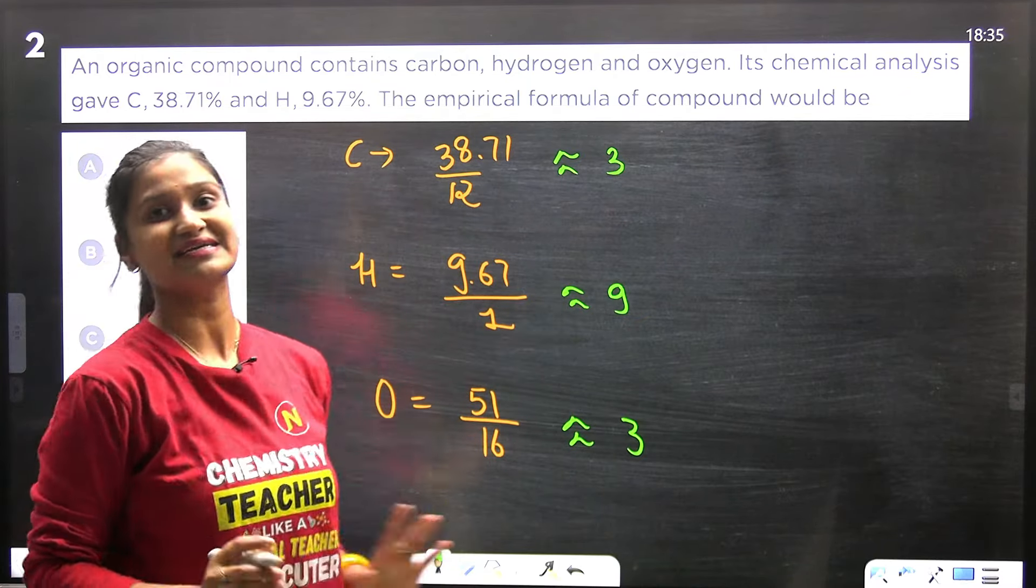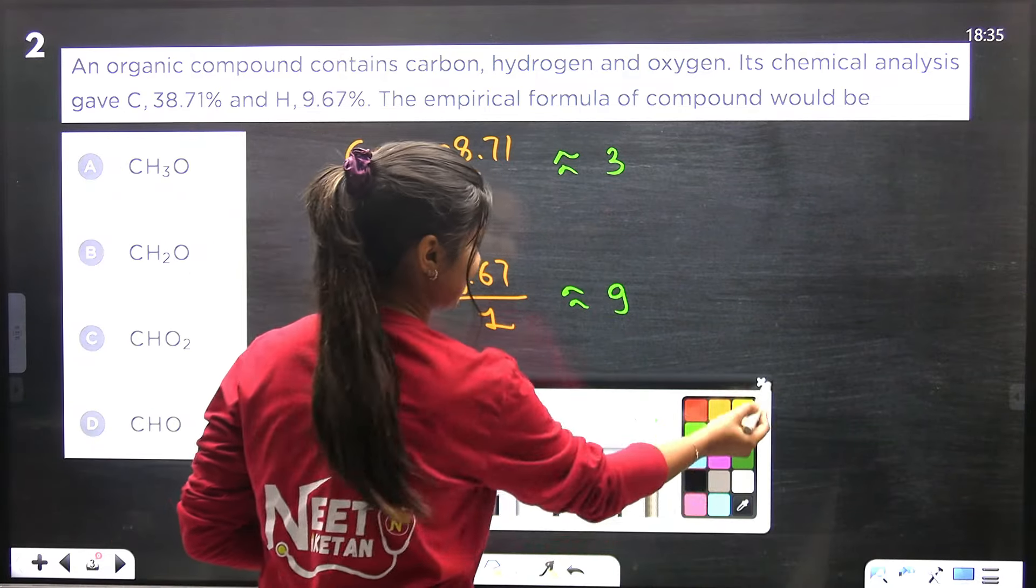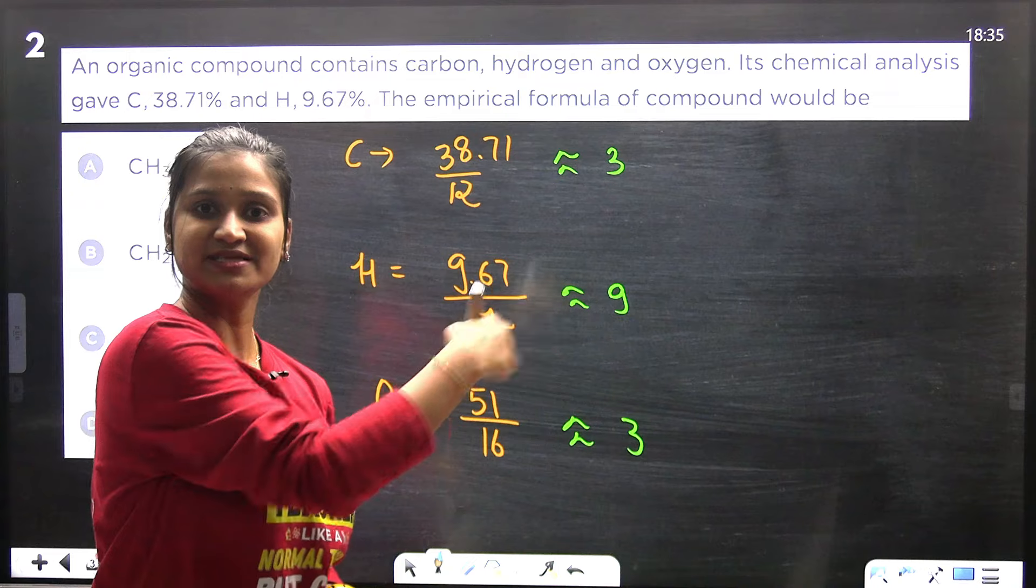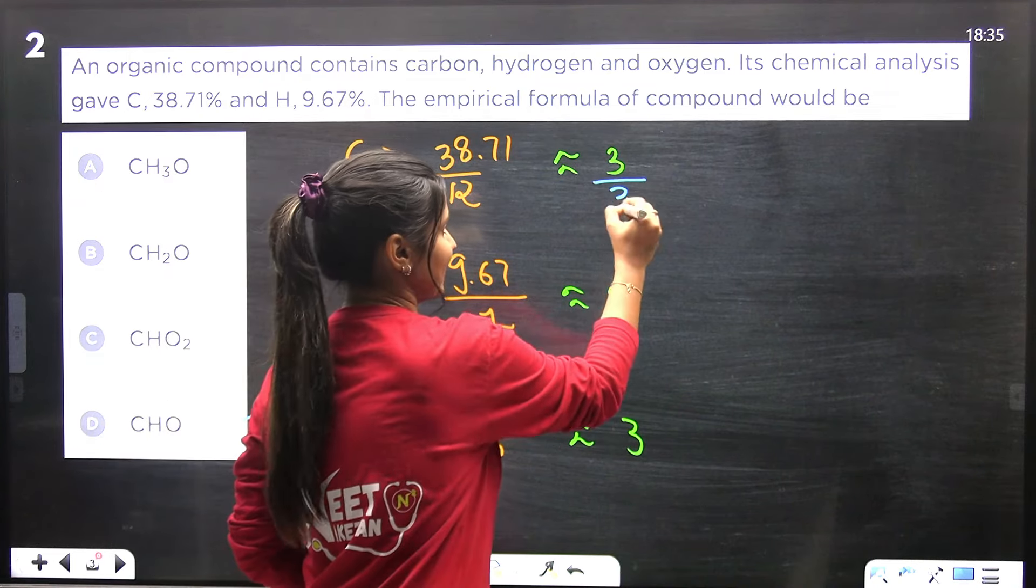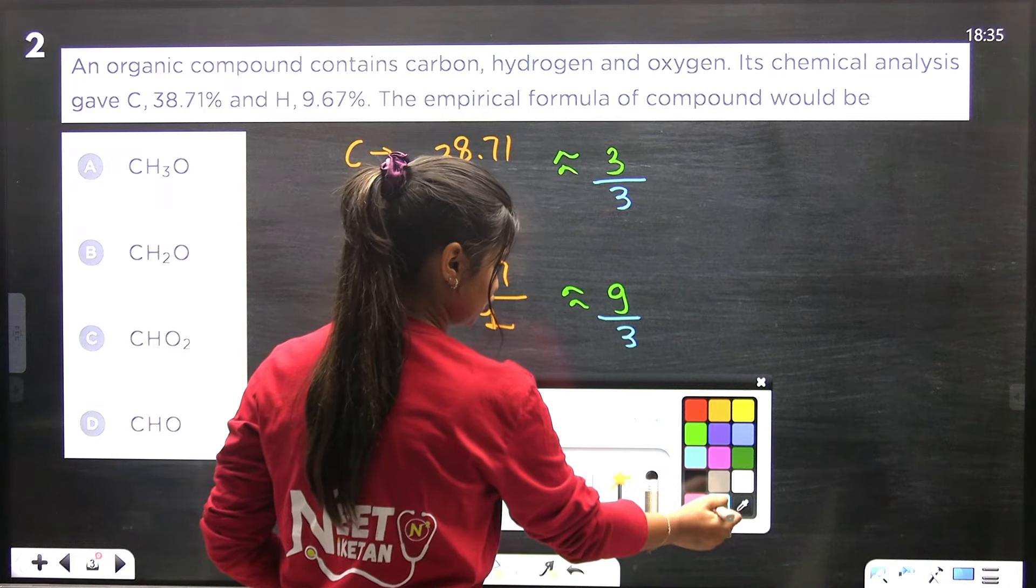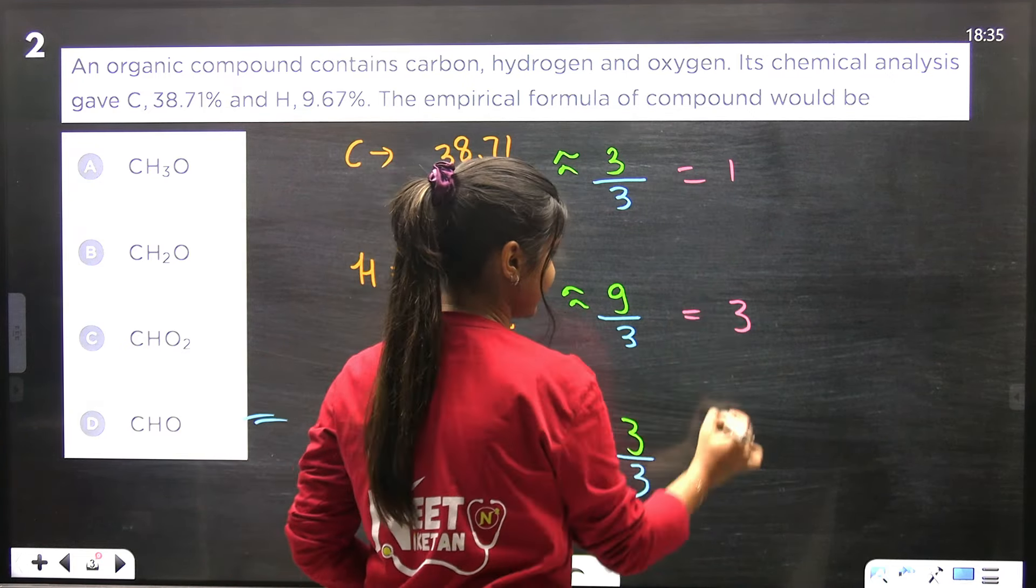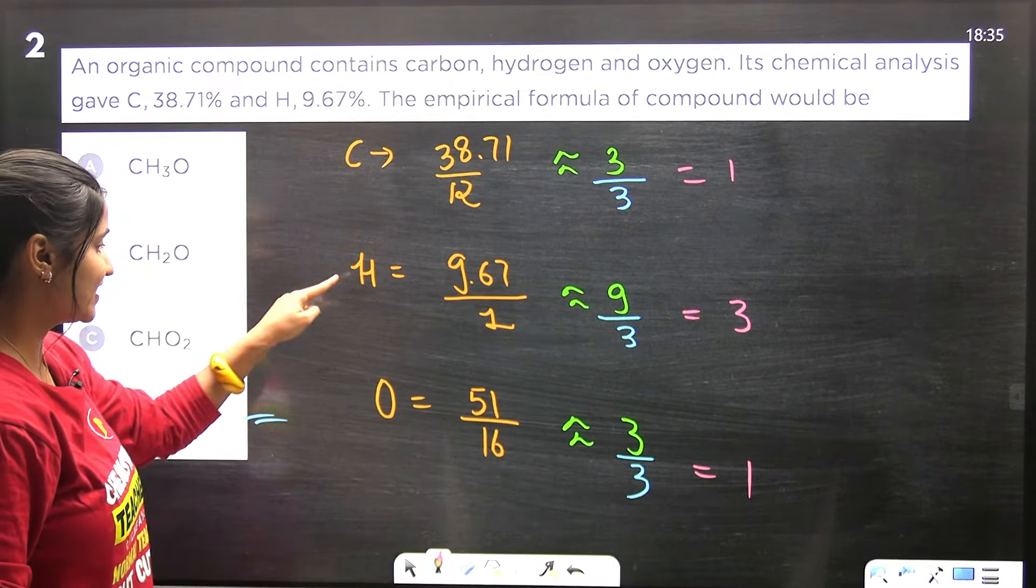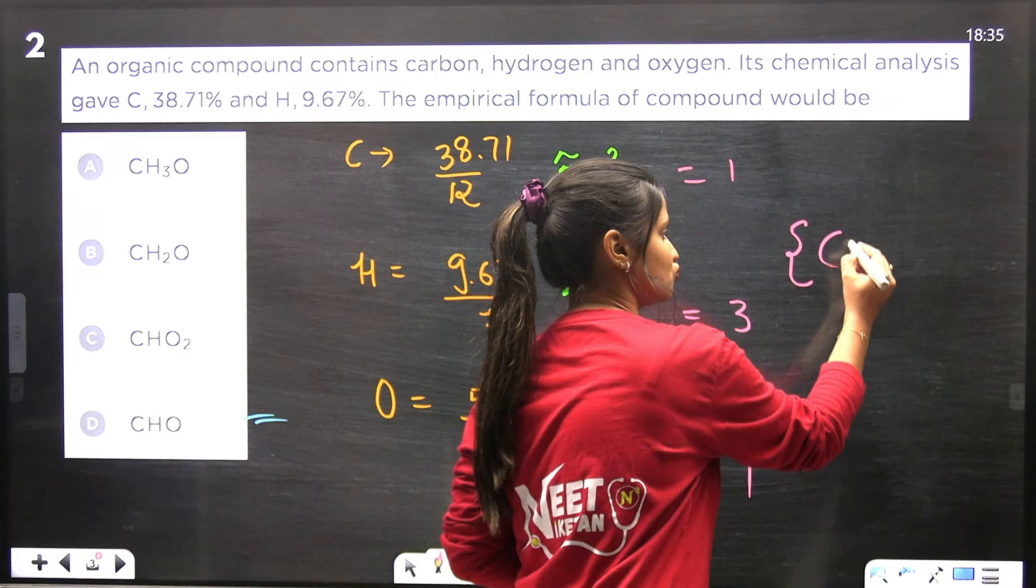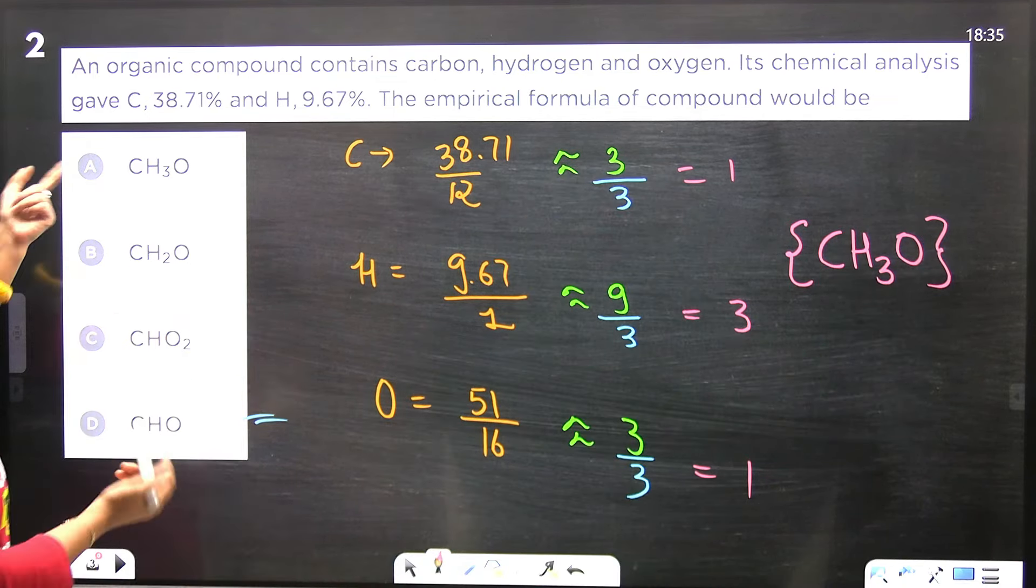This will be around 9 and this will be, 16 times 3 is 48, so again 3. The approximate ratio is 3:9:3. Now to find the simplest ratio, divide everyone by the smallest number. 3 by 3, 9 by 3, 3 by 3. So it comes out to be 1, 3, and 1. The empirical formula is CH3O. Check which option - option A itself is the right choice. We got our answer.